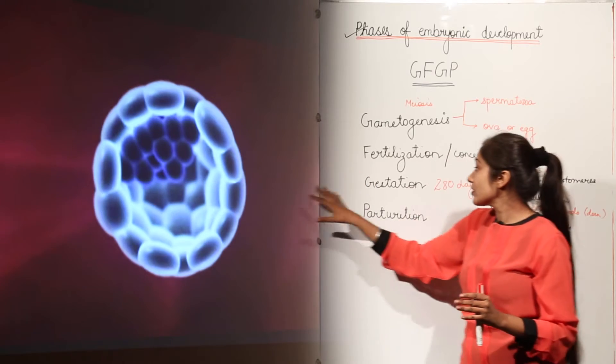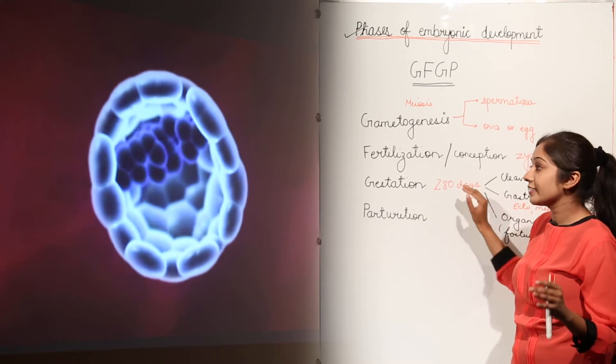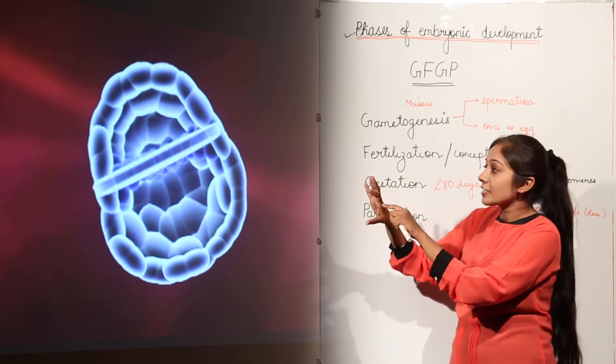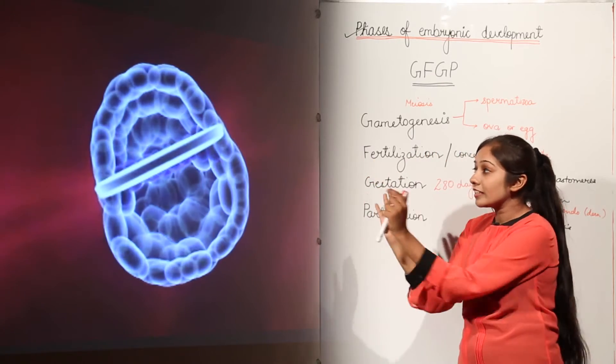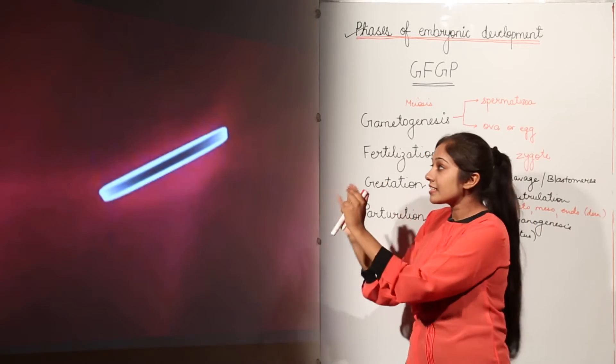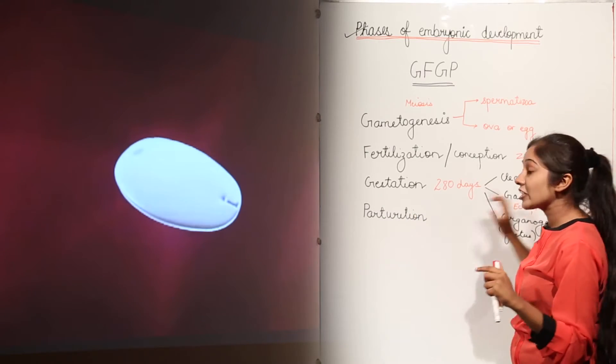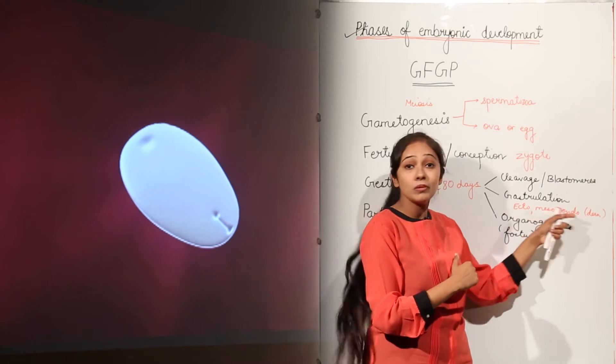After its implantation, this gestation period which we call as 280 days is just going to start. And these inner cell mass is going to form a special structure in which now there is special cell movement. This cell movement is taking place for the formation of this gastrulation, that is formation of these three germ layers.